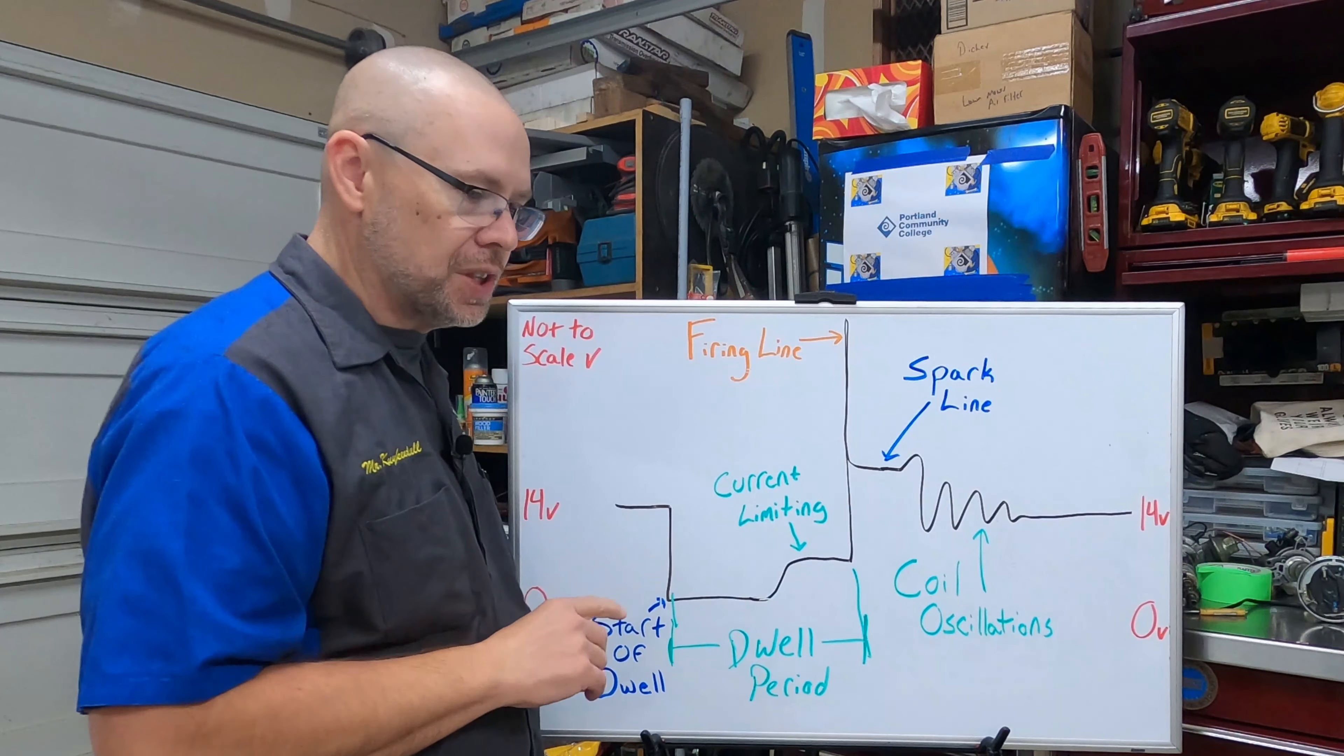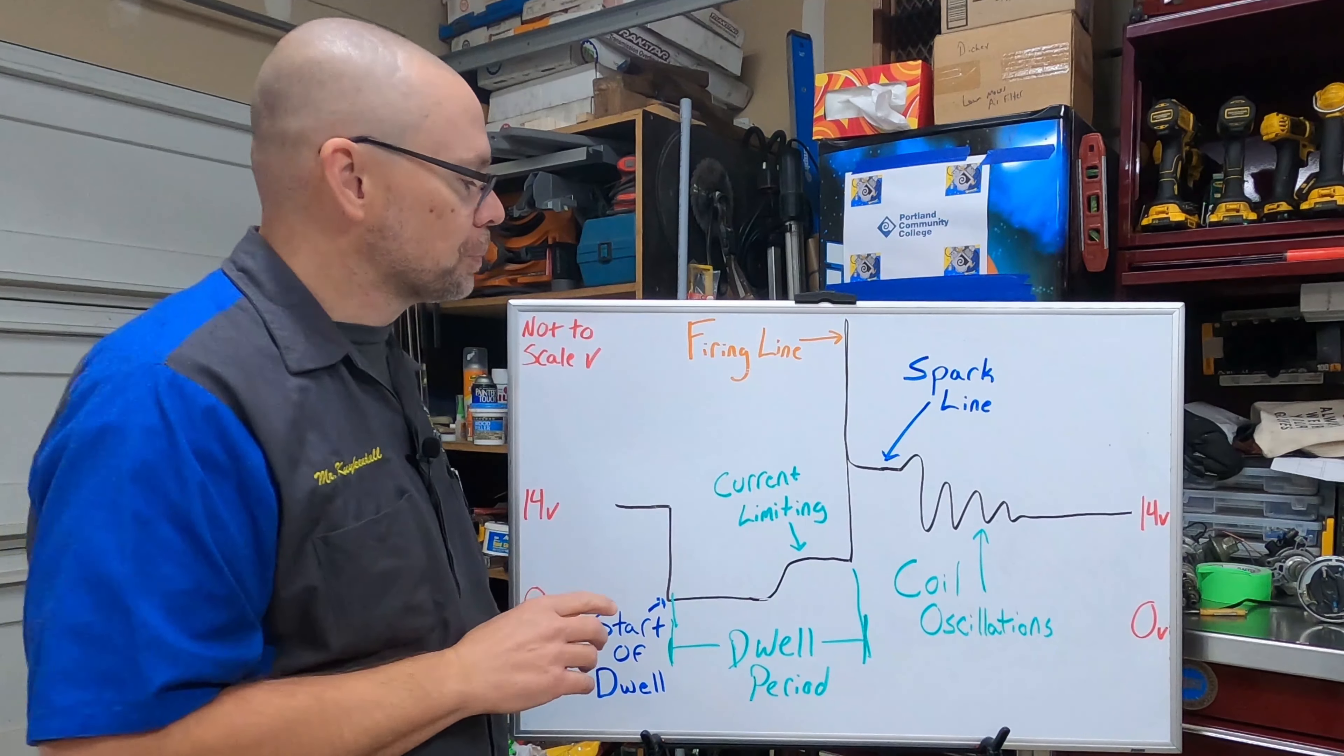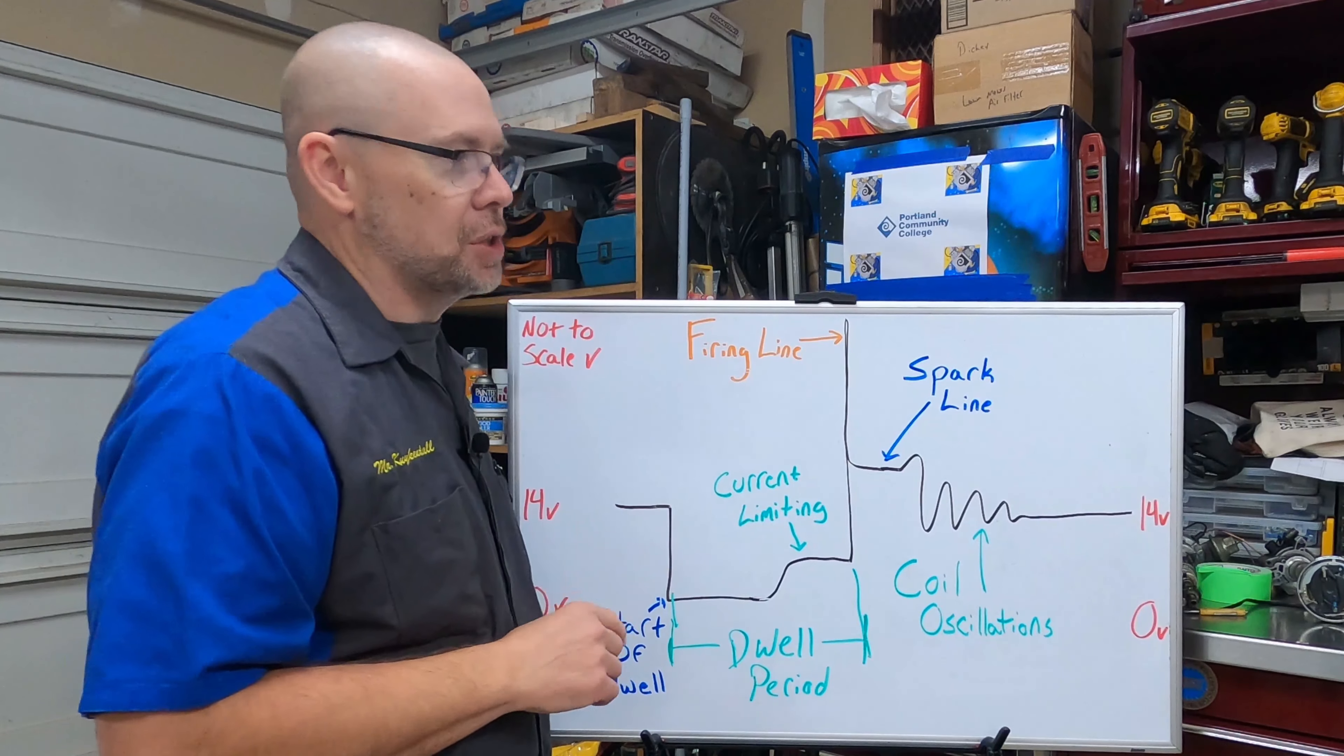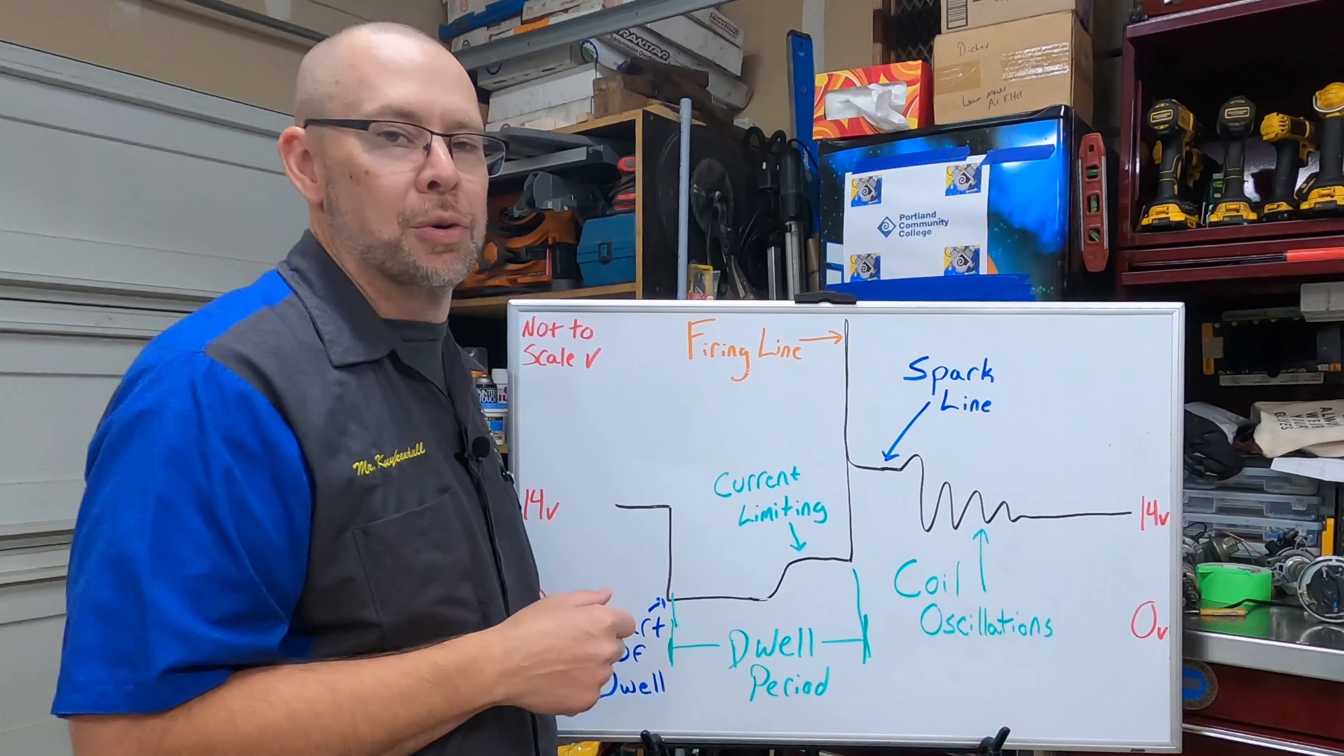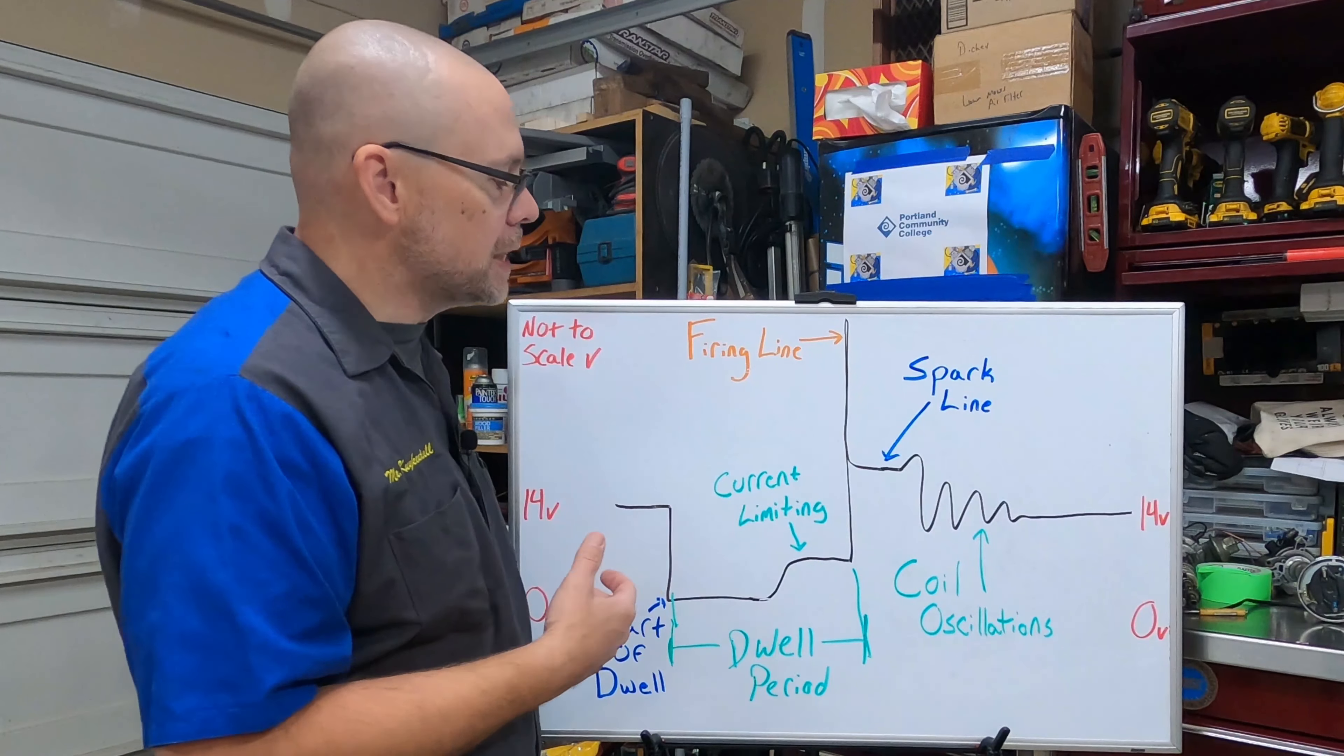That creates our firing line. The height of our firing line can change depending on overall resistance in the circuit, any gaps we have in this circuit. And I will also mention that while this is a primary waveform, we'll see examples where the primary and secondary waveforms mirror each other. Any gaps.